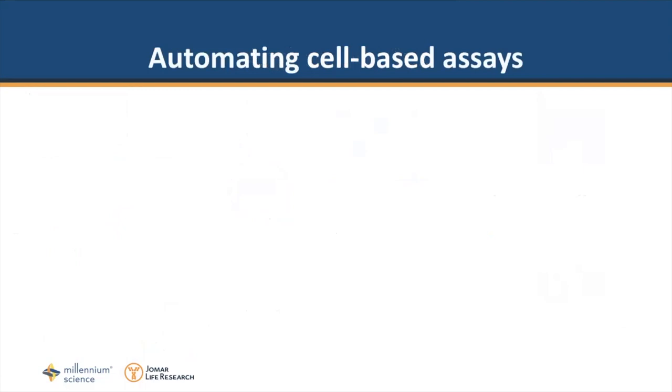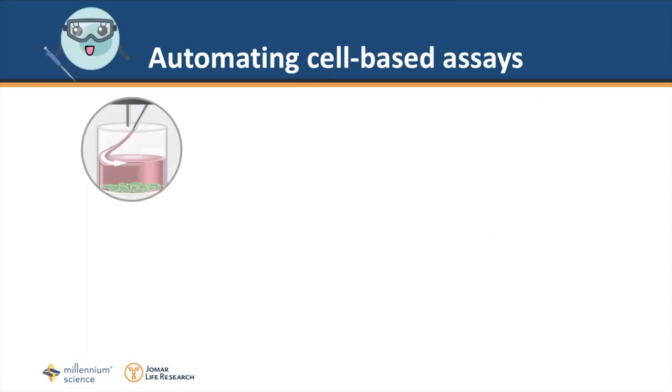The biotech plate washers have two features that permit automation of cell-based assays. The first is angling of dispense tubes and the second is by reducing fluid flow. Angled dispense tubes adjust the fluid path to the side of the wall. Doing so reduces the vortex-like effect that liquid dispensing creates and this can be detrimental to the monolayer integrity.